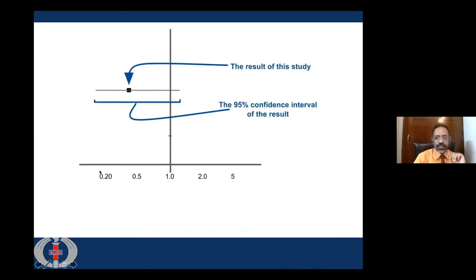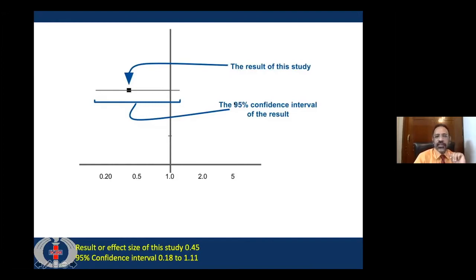Once we have created this graph, we put in data for individual studies as individual lines. These lines have two components: the result of that particular study, shown as a box, and the dispersion or 95% confidence interval, shown as a horizontal line. For example, in one study the result was 0.45, and the 95% confidence interval ranged from 0.18 to 1.1. This is how each study is placed on the forest plot.